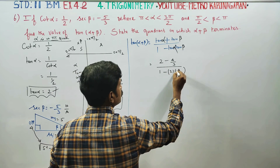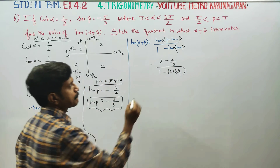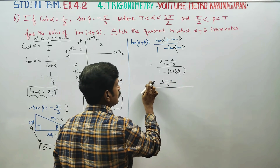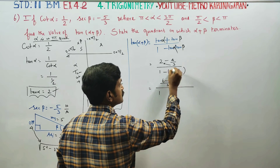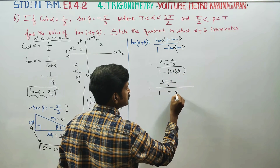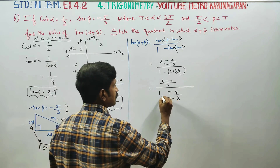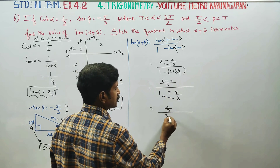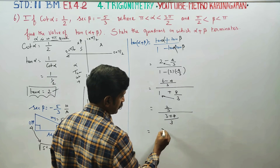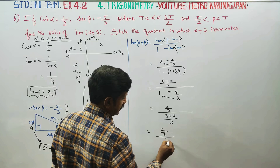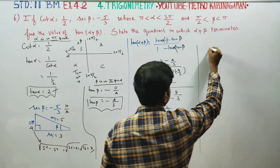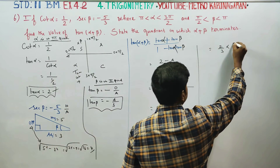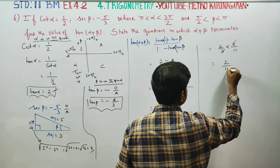Taking LCM 3 in the numerator: 2 is 6 by 3, minus 4 by 3, giving 2 by 3. In the denominator: 1 minus (2 times minus 4 by 3) which is 1 minus (minus 8 by 3) = 1 plus 8 by 3 = 11 by 3. So tan(α + β) = (2 by 3) divided by (11 by 3) = (2 by 3) multiplied by (3 by 11) = 2 by 11.